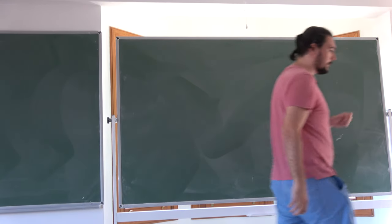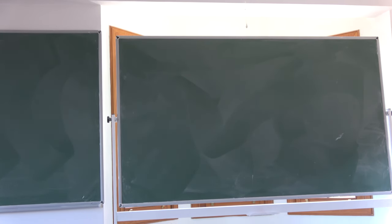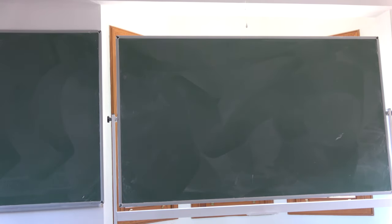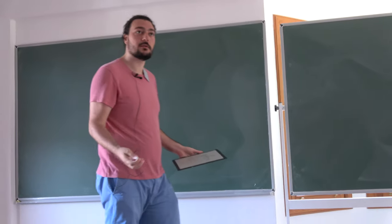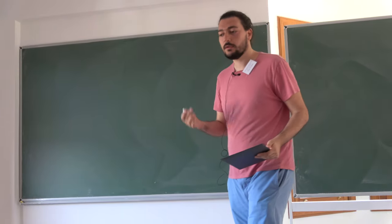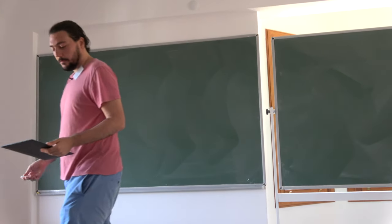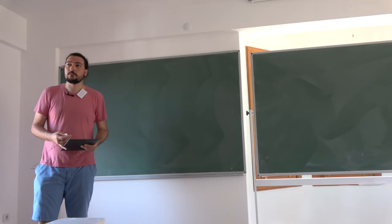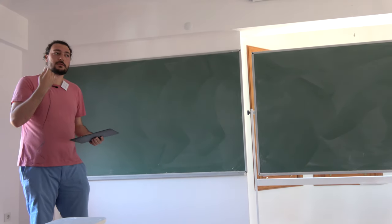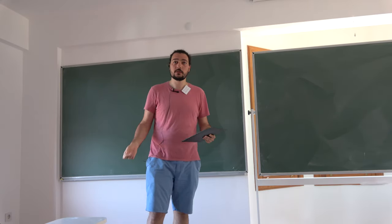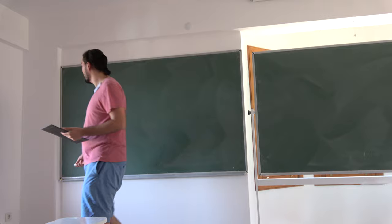Welcome everyone. We will be talking about the Lie group G2, its Lie algebra, representations, and G2 geometry. There are a few different ways to think about the group G2, and the most natural one is to view it as the automorphism group of the Octonians. I'll start by defining the Octonians.